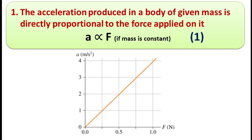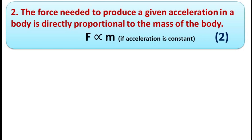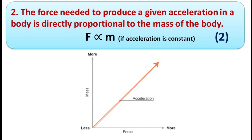The force needed to produce a given acceleration in a body is directly proportional to the mass of the body. So force is directly proportional to mass if acceleration remains the same — write this as equation number two. If we plot a graph for force F against mass M, it will be a straight line as shown in the figure.